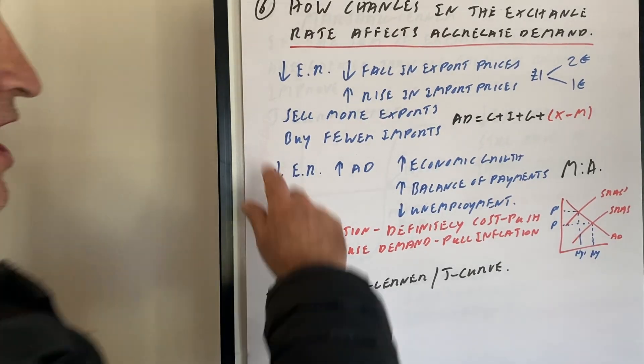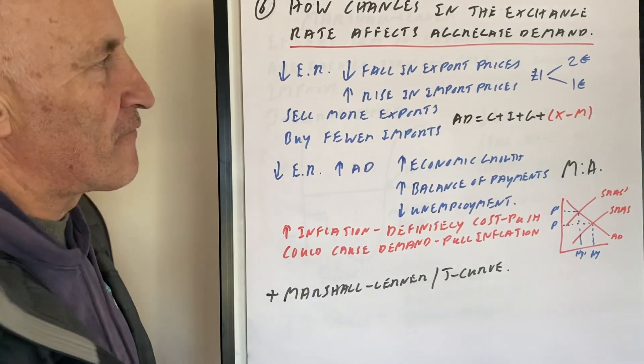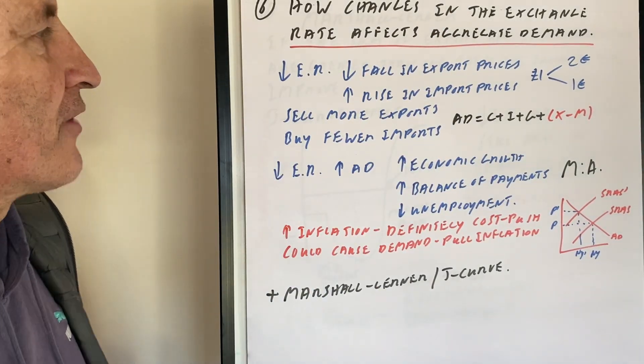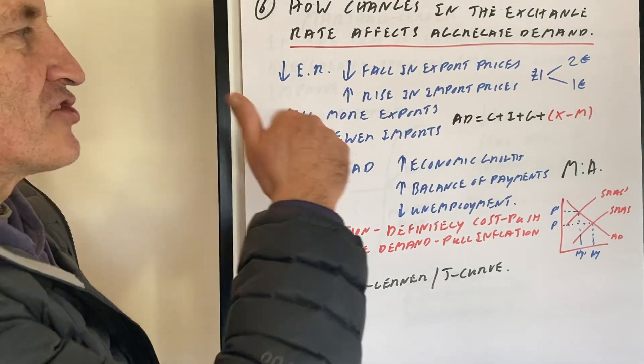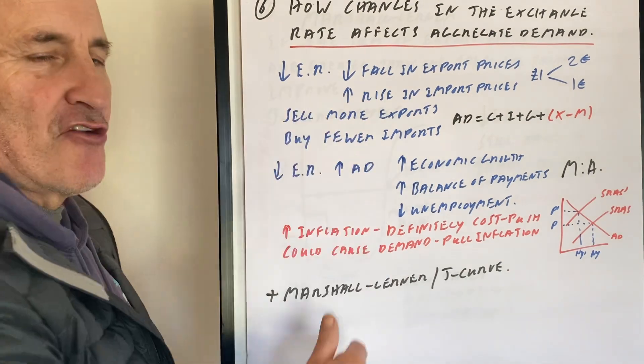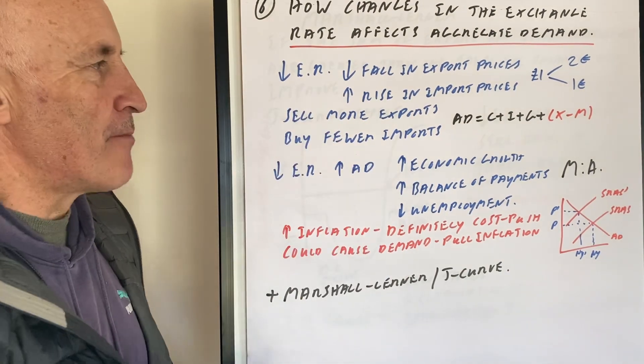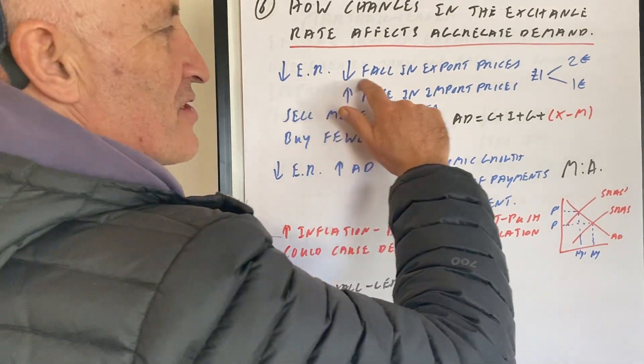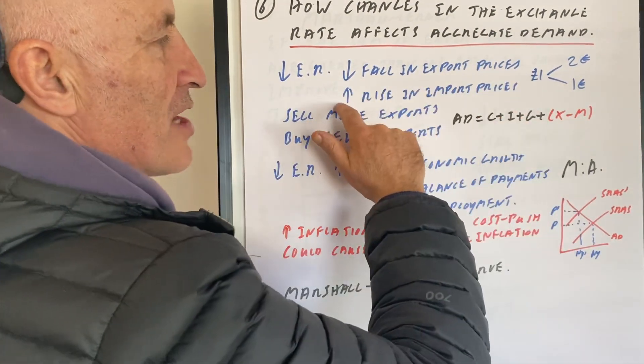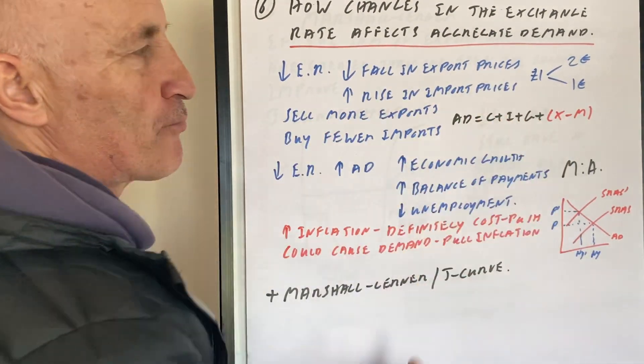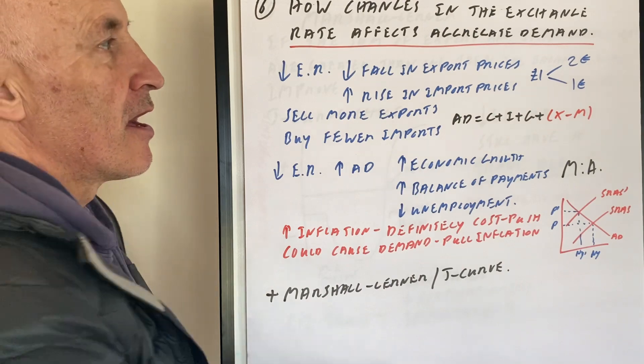This video is about how changes in the exchange rate affect aggregate demand. If the exchange rate goes down, you must remember that there is a fall in export prices and a rise in import prices.